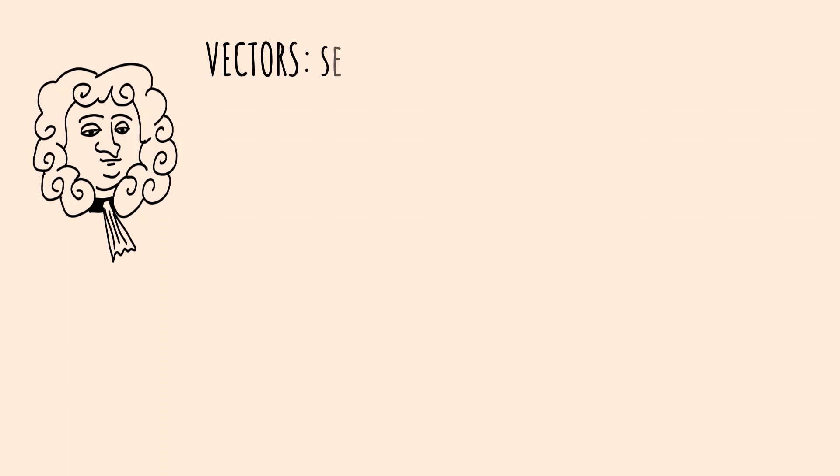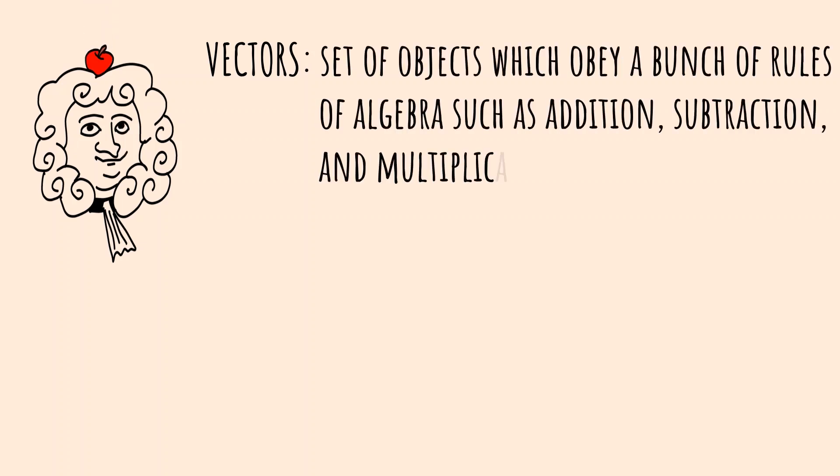Mathematicians think of vectors as set of objects which obey a bunch of rules of algebra, such as addition, subtraction, and multiplication.